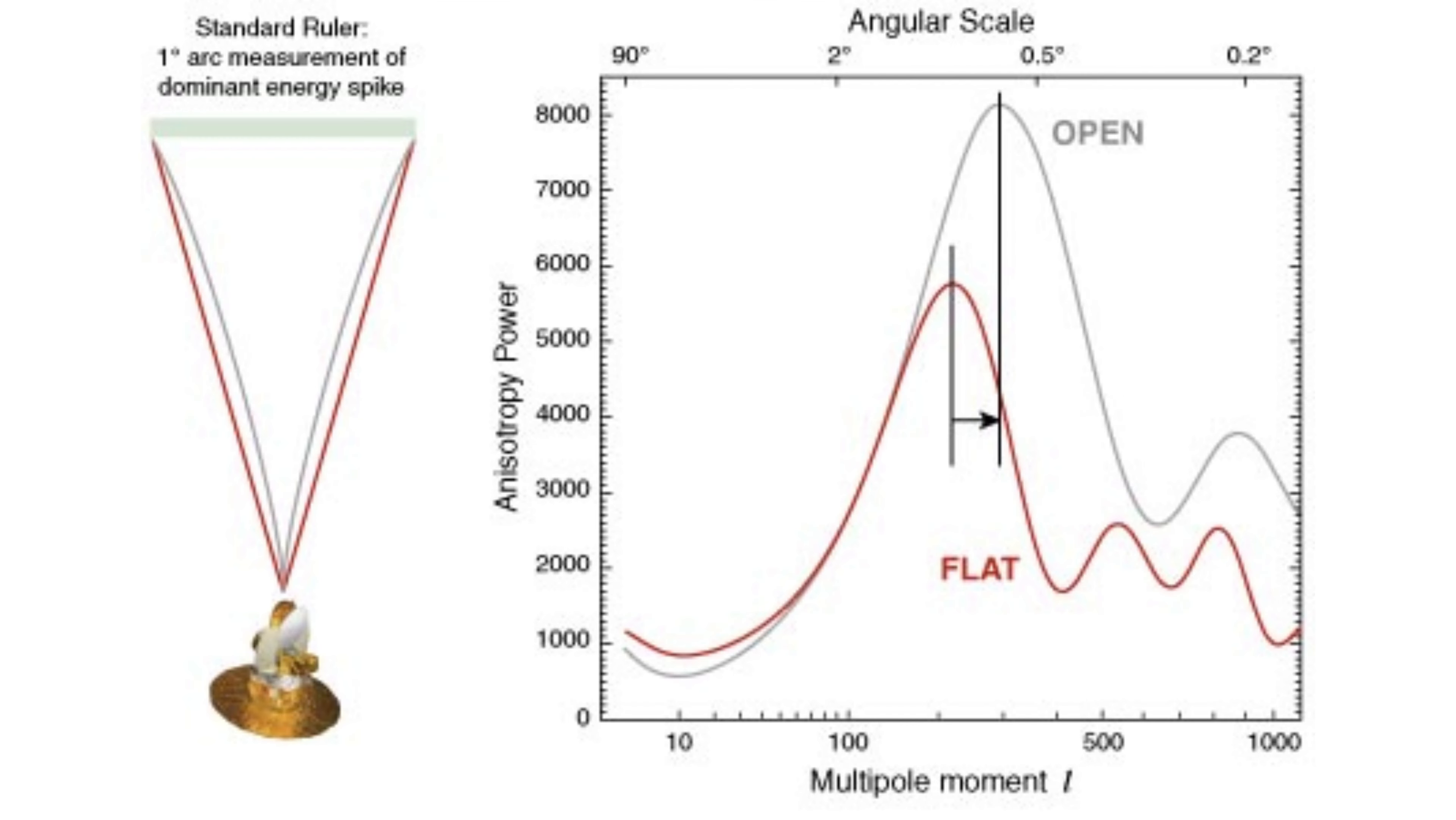The figure illustrates this situation with two possible outcomes. The red lines indicate straight light paths to us from the opposite side of a typical hotspot in CMB, as would be the case in a flat universe. The gray lines indicate corresponding curved light paths as they would appear in a universe with negative curvature.